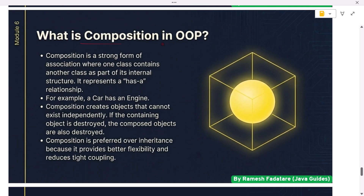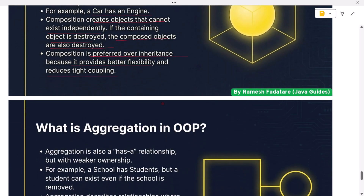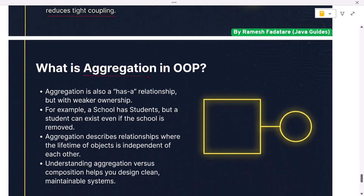What is composition in OOP? Composition is a strong form of association where one class contains another class as part of its internal structure. It represents a 'has-a' relationship — for example, a Car has an Engine. Composition creates objects that cannot exist independently; if the containing object is destroyed, the composed objects are also destroyed. Composition is preferred over inheritance because it provides better flexibility and reduces tight coupling.